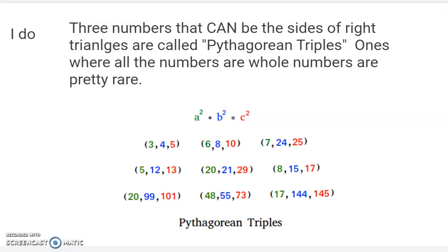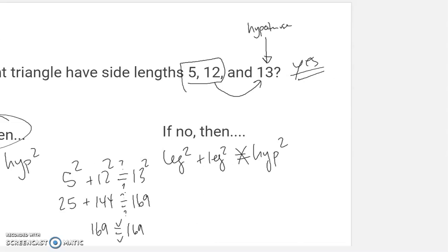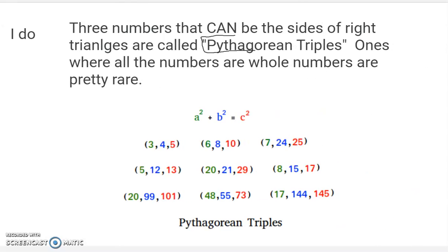Before I do another one, in this case, when you do get a yes for this kind of question, so like 5, 12 and 13 were a yes, they all make a right triangle. When you get numbers that work like that, those are called Pythagorean triples. They're ones, especially where all the numbers are whole numbers. Here are some other common ones. They're not very common. They're actually quite rare. There's not that many sets of three numbers where if you square one, square the other, add them together, you'll get another whole number squared. So those are called Pythagorean triples, just the set of three numbers.